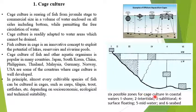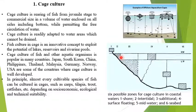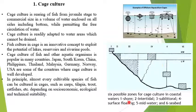Six possible zones are preferable for cage culture: the shore where water is above the cage, intertidal zones where water rises and falls, sublittoral zones, and various other sites in lakes, seas, and rivers where cage culture can be practiced.